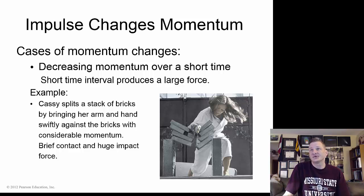Here's another example of impulse changing momentum. A short time interval produces a large force. Here she is breaking these concrete slabs or bricks with her arm. She does it very quickly but with a lot of force, and that ends up breaking the concrete.